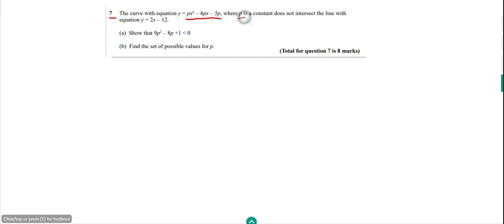P is a constant such that it doesn't intersect with this straight line. This is a linear equation in X. Y is a function of X that's a linear equation. So what we can do, first of all, is look at if we were looking for the point of intersection, then we'd equate these two things together.